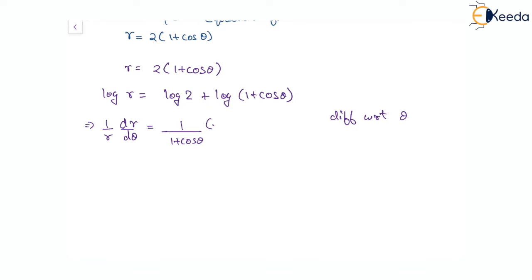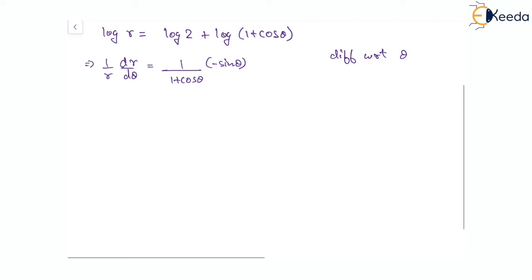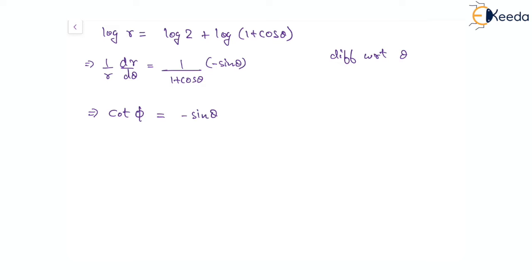The differentiation of one plus cos theta is minus sine theta. Therefore we can see that one by r times dr by d theta equals minus sine theta over one plus cos theta. This is actually cot of phi, because tan of phi is given as r d theta by dr.